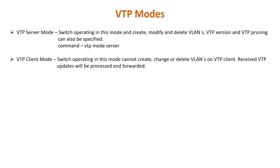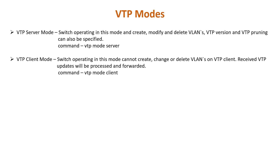The second is VTP client mode. A switch operating in this mode cannot change its VLAN configuration — you cannot create, change, or delete VLANs on a VTP client. Received VTP updates will be processed and forwarded. To configure a switch as a VTP client, use the 'vtp mode client' global configuration command.